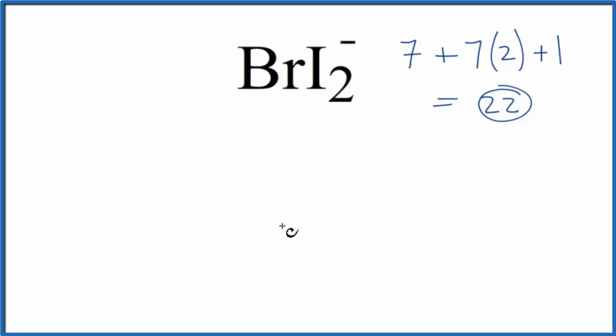Normally, we would put the least electronegative element in the center. In this case, that's the iodine. But since we have 2 iodine atoms, I'd like to put the bromine in the center. They're very close in their electronegativities, but symmetry is also nice. We'll check the formal charges a little bit later. We have 22 valence electrons.